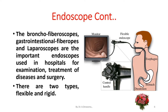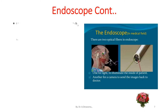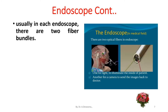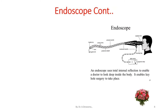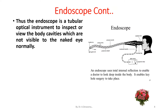There are two types of endoscope: flexible endoscope and rigid endoscope. Usually, in each endoscope there are two fiber bundles. One is used to collect the reflected light from the area, from which we can view the inner structure of the object. The other is for a camera to send the images back to the doctor. Thus, the endoscope is a tubular optical instrument to inspect or view the body cavities which are not visible to the naked eye normally.